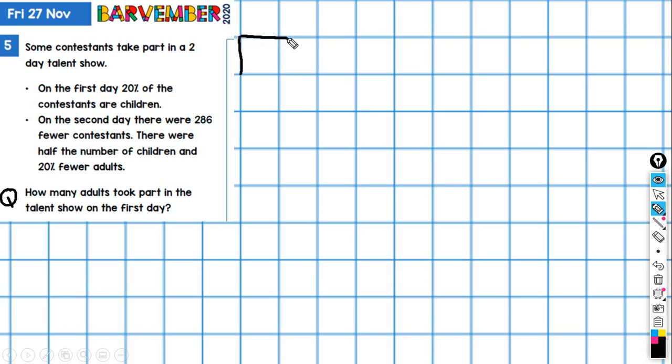2, 4, 6, 8, 10. Because we're dealing in percentages, I'm going to draw a 10 part model. We can imagine that this represents the first day, day one.